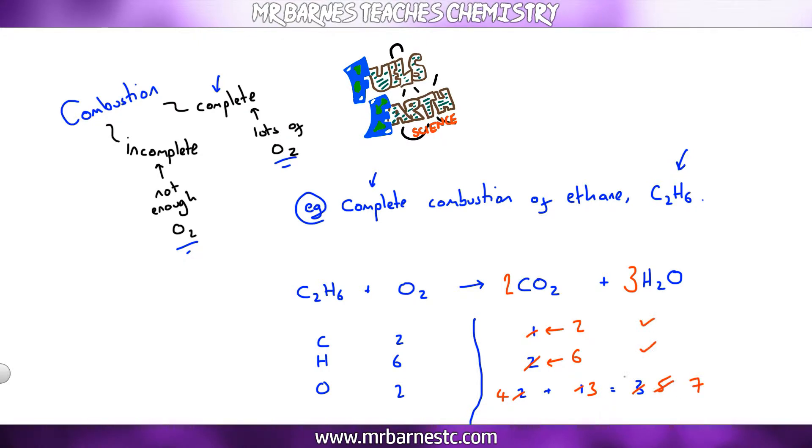Now I've run into a bit of a problem. I need how many oxygens to get seven? 3.5. You can't put 3.5 in because it's not a whole number. So what I'm going to do is I'm going to double everything, because that will put that up to seven. I had two CO2, so I'm going to make that four, and I had three H2O, so I'm going to make that six. And then I only had one C2H6, so I'm going to double that as well. So it will end up looking like two C2H6 plus seven O2 goes to four CO2 plus six H2O.